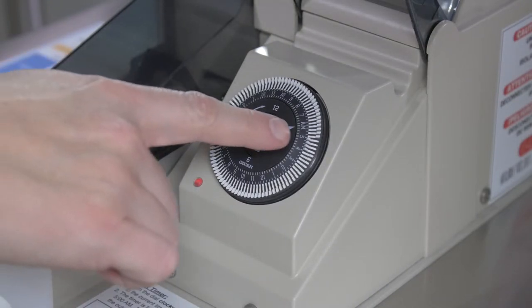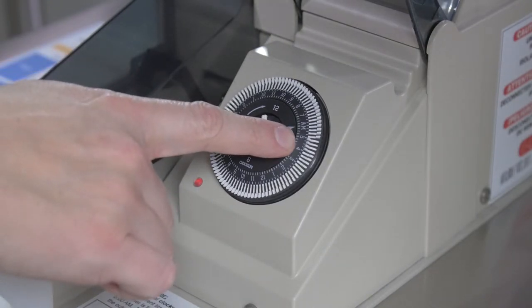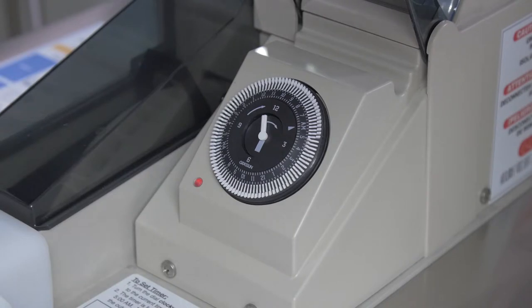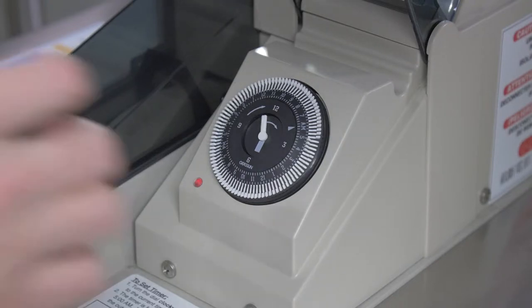The timer is set by moving the tabs located along the outer ring inward at the desired operating time. Each tab represents 15 minutes of operation, and all Big Dipper analog timers are factory set to run between 4 and 5 in the morning.